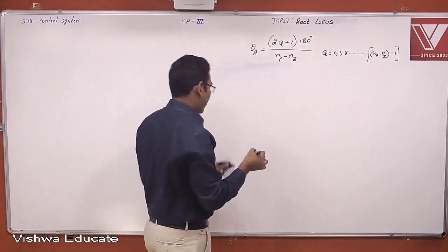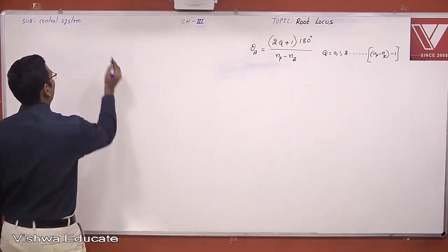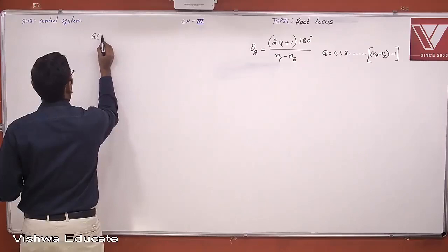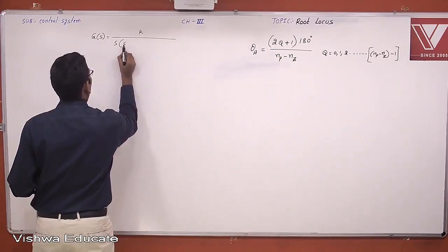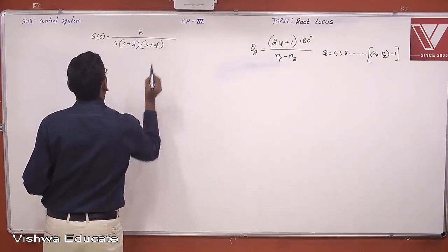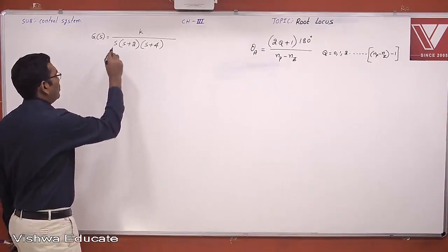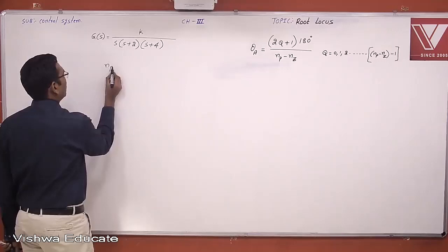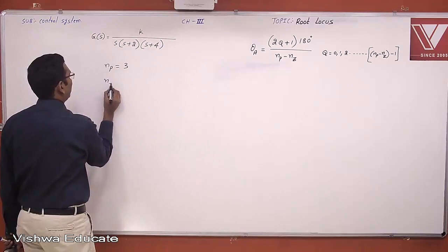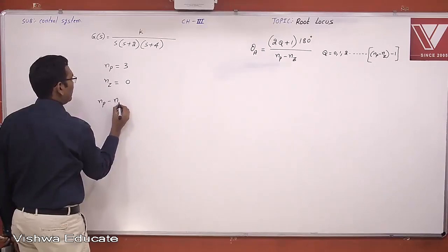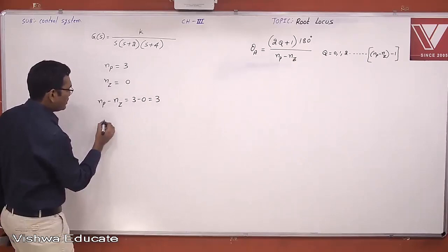Let us take a small problem. G(s) = K / [s(s+2)(s+4)]. The total number of poles Np is 3, and the total number of zeros Nz is 0. Therefore Np − Nz = 3 − 0 = 3.